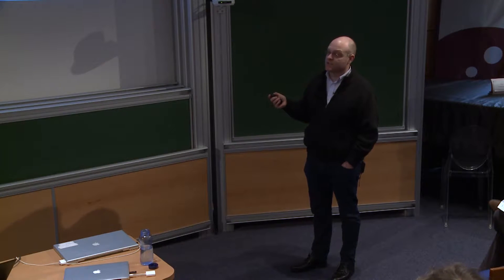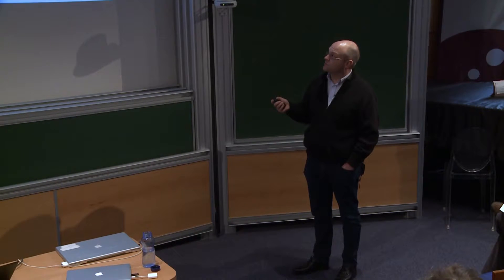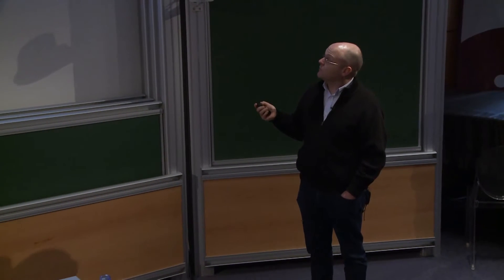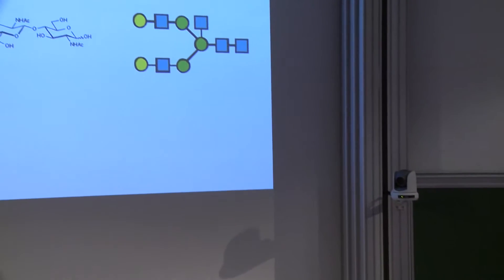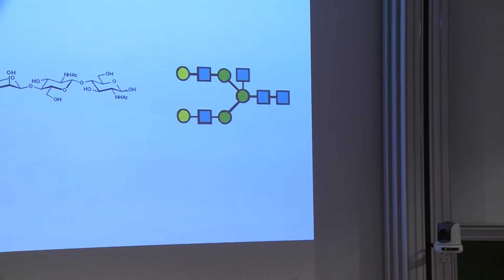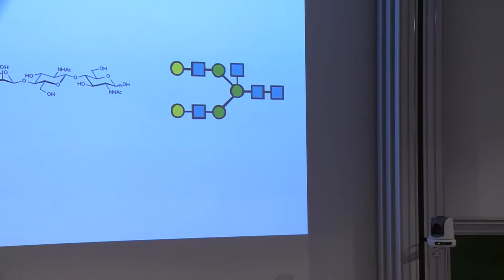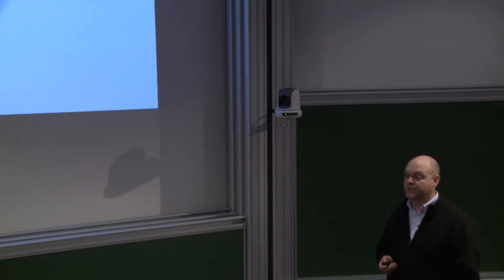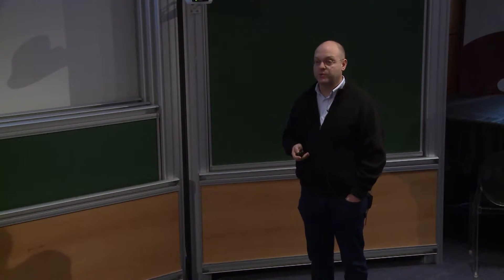Every symbol is a monosaccharide: squares have glucose topology, so this would be N-acetyl glucosamine. Green circles would be mannose. Mannose differs from glucose because of the hydroxyl functionality on the C2 position. These are the main topologies in the carbohydrates I will talk about today.